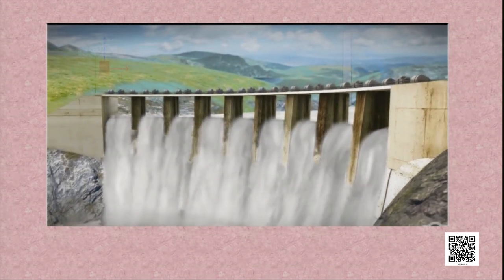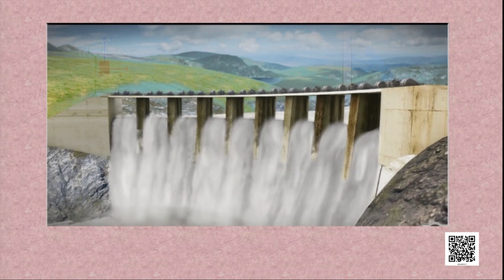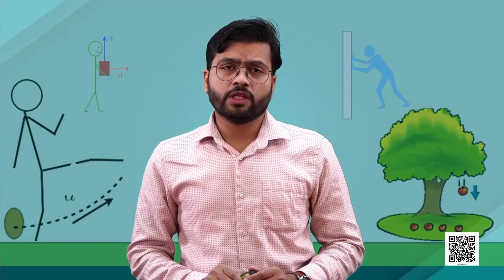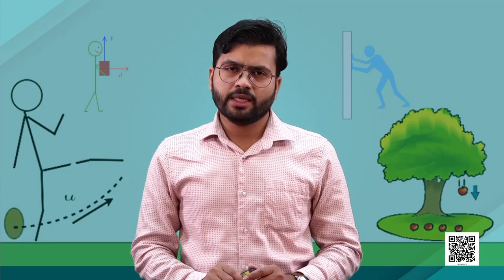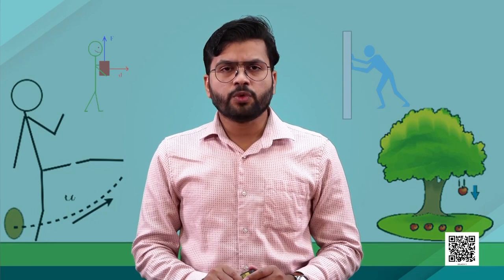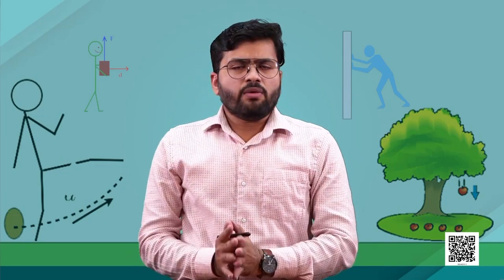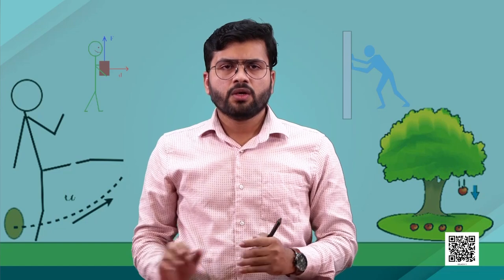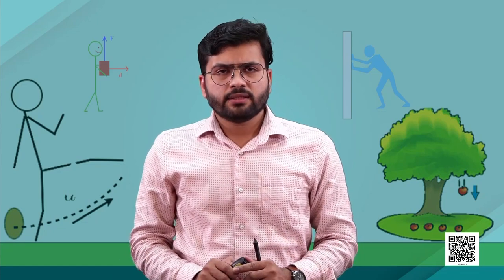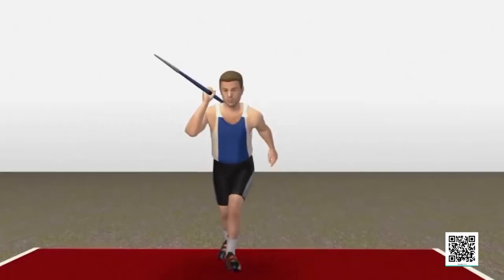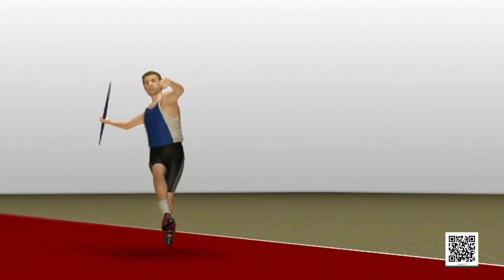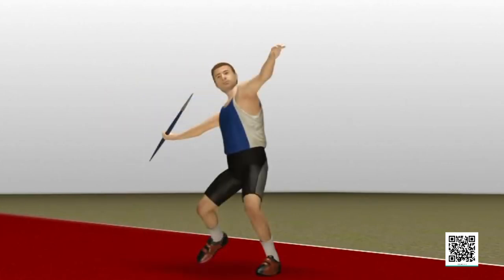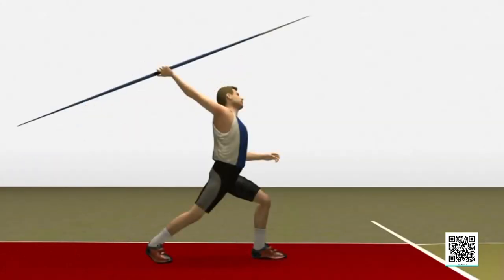Water stored behind a dam or at the top of a waterfall has gravitational potential energy. As you saw in the video, gravitational potential energy increases as the height of the object increases — as the vertical height increases, the potential energy also increases. For example, a player throwing a javelin: as the player lifts the javelin to a certain height, it acquires some energy because work has been done against the gravitational pull while lifting.